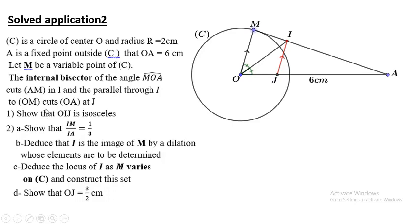First question: Show that OIJ is an isosceles triangle of vertex J. Second part: Show that IM divided by IA, this ratio equals 1 over 3. Naturally, it's less than one because IM is the smallest and IA is the greatest.